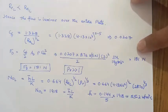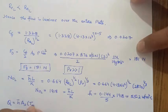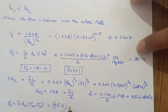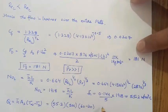The heat transfer rate Q equals H times A times (T-infinity minus Ts), which is 55.2 times area 5 times 1 times temperature difference (60 minus 20), giving Q equals 11040 watts.